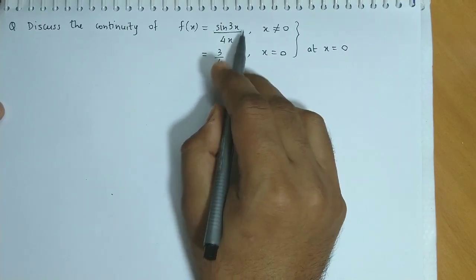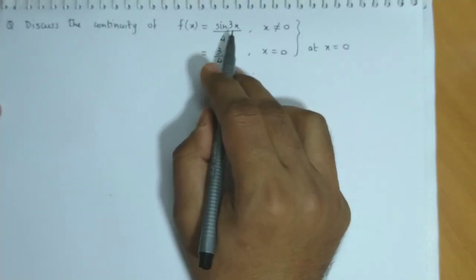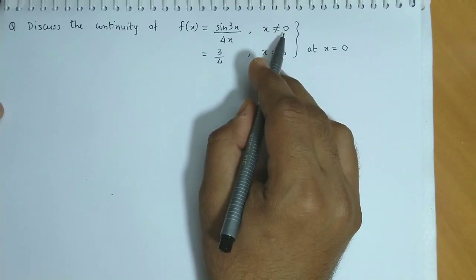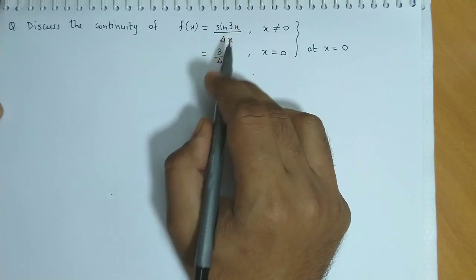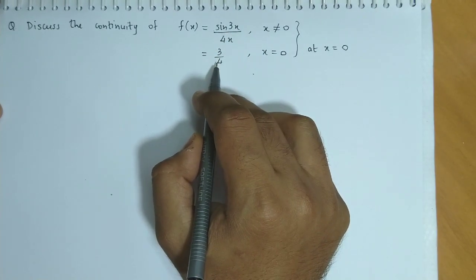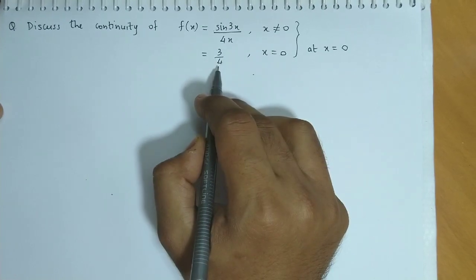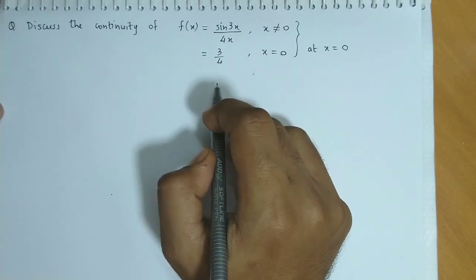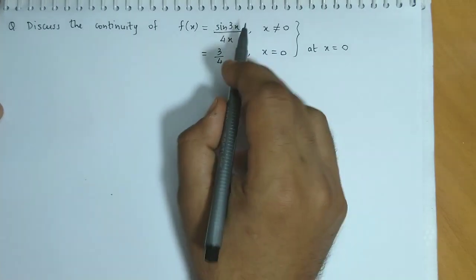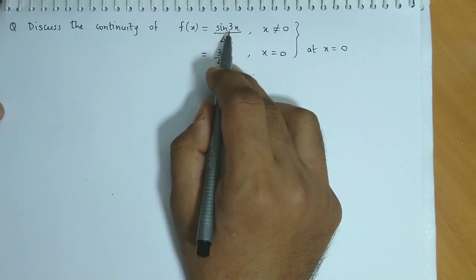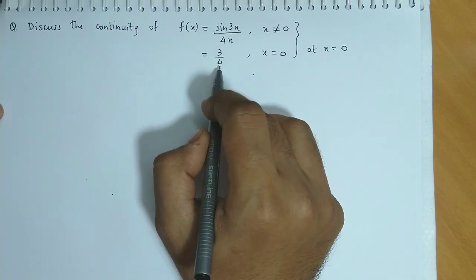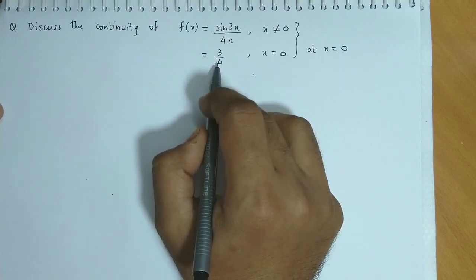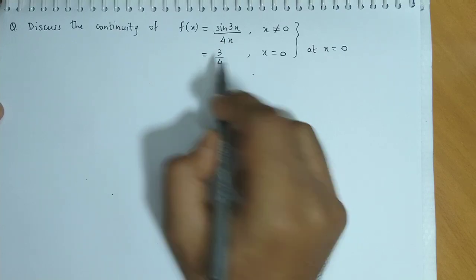We will find f(x) limit when x is approaching 0, i.e., x is not equal to 0, and if its value is 3 by 4, i.e., x is equal to 0, then we say the function would be continuous. So we will find the limit and see if it matches or not. If it matches, then the function would be continuous.